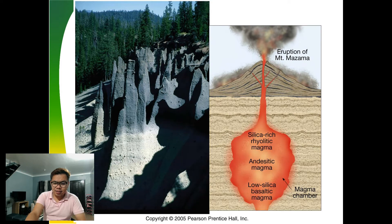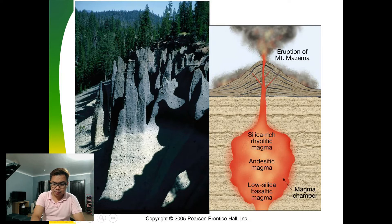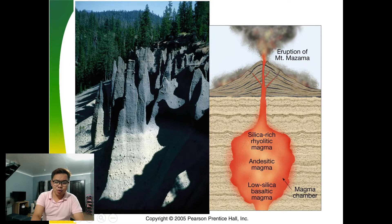Here is an example showing how igneous rocks form from the magma chamber. The magma blows up from the vent, and what remains after cooling down becomes igneous rock. The process depends on the temperature and pressure present.